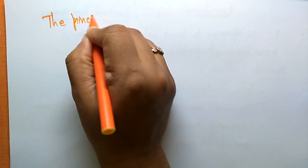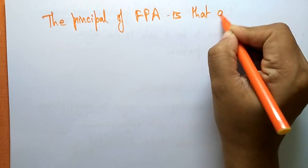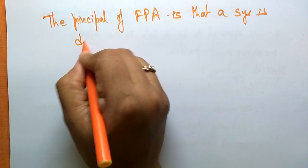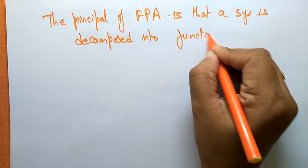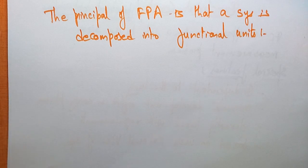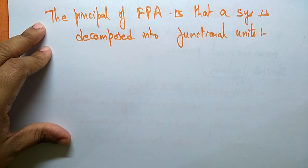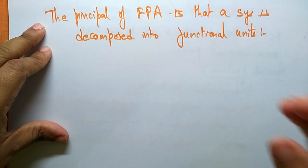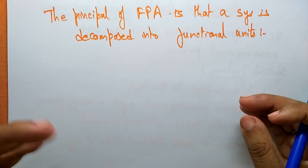Now let us see the principle of functional point analysis. The principle is that a system is decomposed into functional units. If you take any system, that system will be decomposed into functional units. The main principle of functional point analysis is to decompose the system into functional units. Totally there are five functional units into which a system is decomposed.